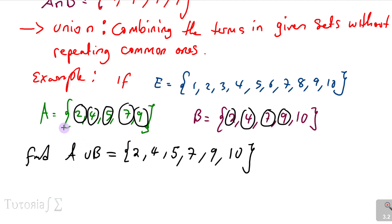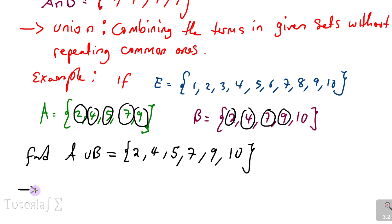So we've combined elements of A and B without repeating. Elements that appear in both sets are only written once. That is what union means.